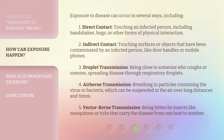2. Indirect contact — touching surfaces or objects that have been contaminated by an infected person, like door handles or mobile phones. 3. Droplet transmission — being close to someone who coughs or sneezes, spreading disease through respiratory droplets.